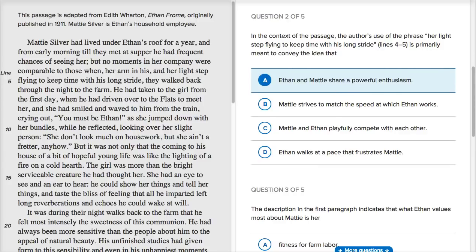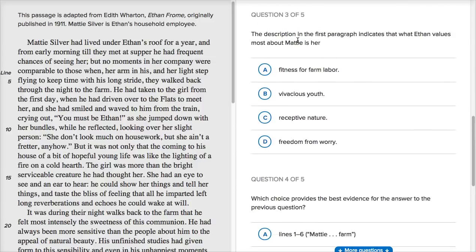Let's look at the next question. The description in the first paragraph indicates that what Ethan values most about Maddie is her - fitness for farm labor? No. In fact, he says right over here, she don't look much on housework, so it's not gonna be that. Vivacious youth? That's possible. I mean, she is this kind of youthful spirit that's entered into his life. Receptive nature, freedom from worry. So the receptive nature is interesting, too, because he talks in the whole passage about how open she is about learning about the stars and about geology and whatever else. Well, let's just see.